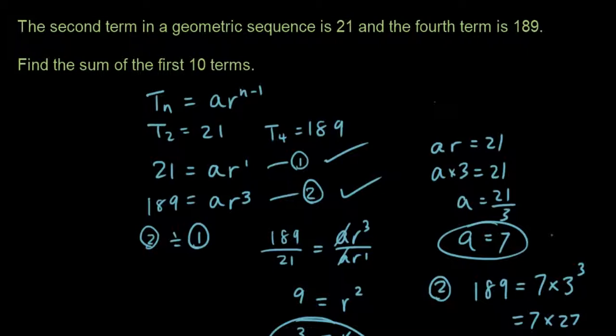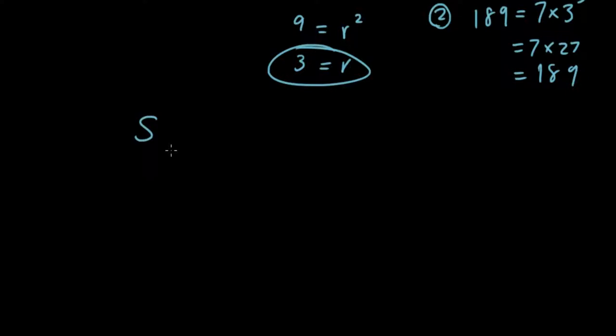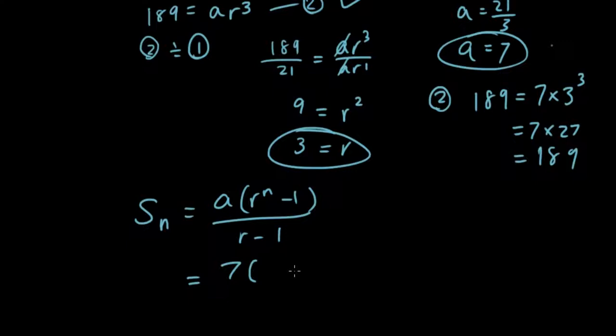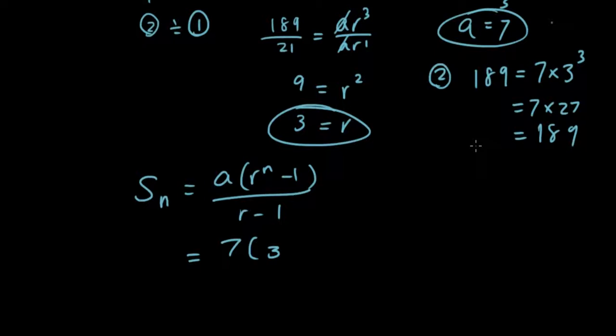Now that we found out what A and R is, we can now substitute these into our geometric series formula, which I discussed in the previous tutorial. And that was Sn equals A times bracket R to the power of N minus 1, divided by R minus 1. So putting the terms that I have into the formula, A is 7, R is 3, and N is 10.